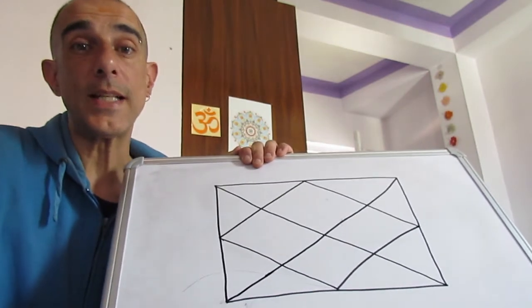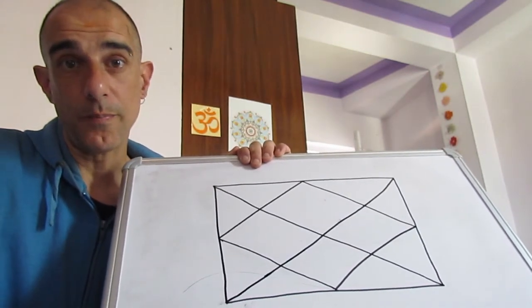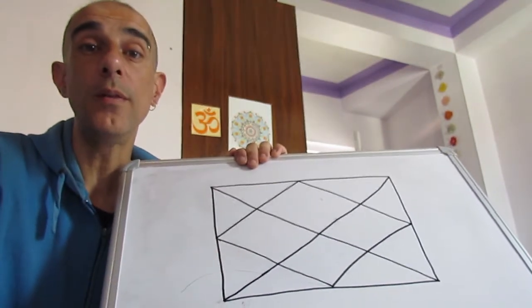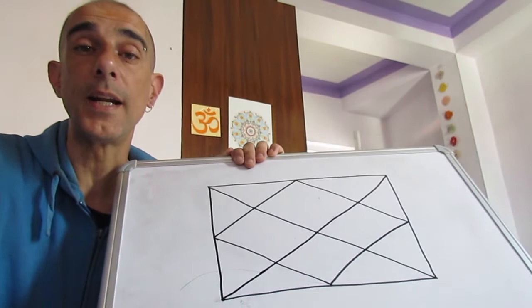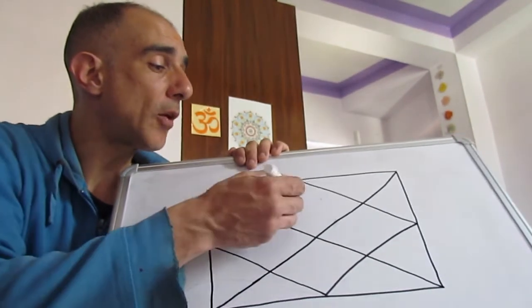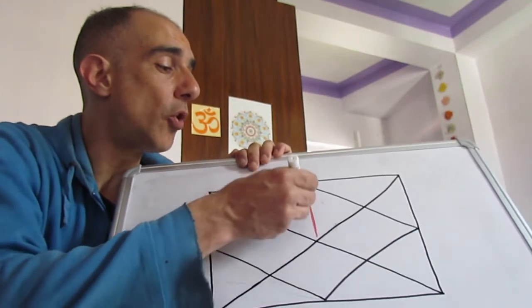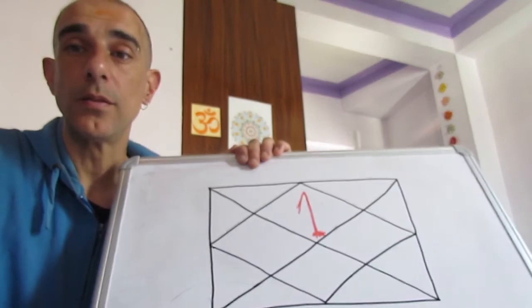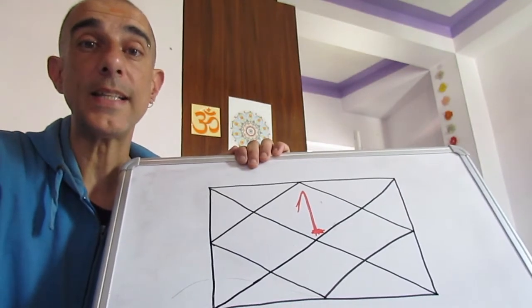Hoy vamos a explicar, insisto, las casas, casas astrológicas. Las casas son cada una de las doce que existen en la carta natal o en la carta astral de determinado acontecimiento, lugar, país, etc. Vamos a empezar con la primera casa. Esto es lo que os pongo hoy: es el número de casa.